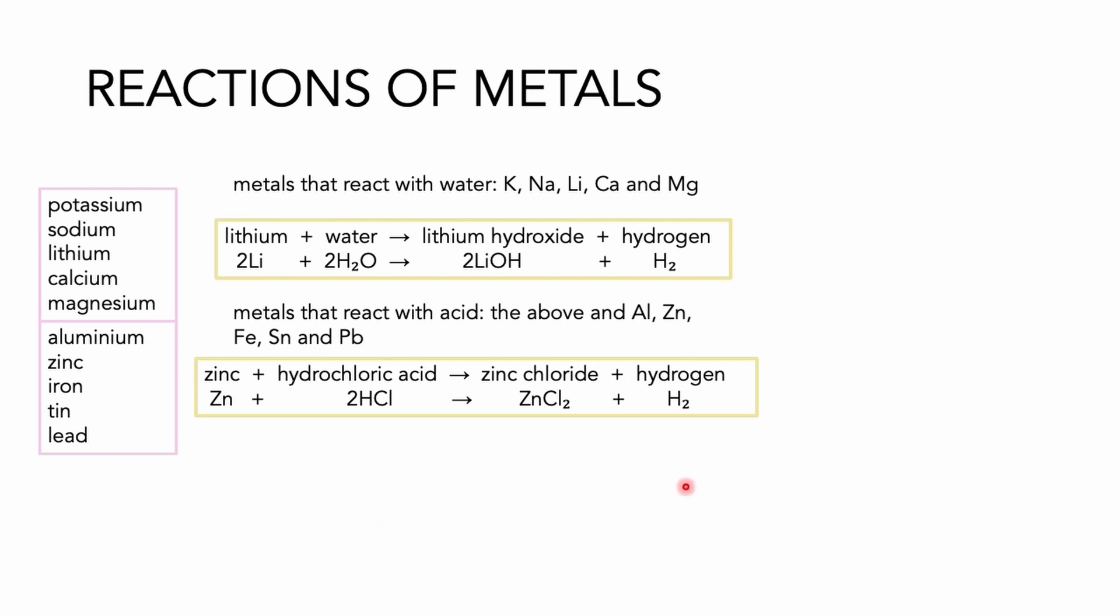From this example with zinc, you can see that when a metal reacts with an acid, it produces a salt and hydrogen.